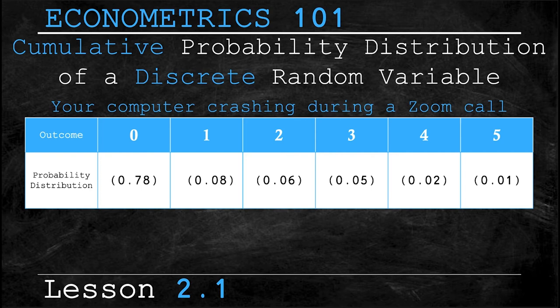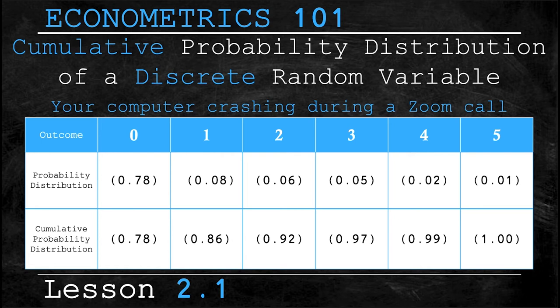Your computer can't crash less than zero times, it can't crash 3.7 times, and it can't crash a sixth time since you've already rage quit by then. Now let's take a look at the cumulative distribution row. All we do to calculate the cumulative probability is add up all of the previous probabilities. So here you can see that there's an 86% chance of your computer crashing once or less. That's the sum of the probability it crashes zero times, which is 78, plus the probability that it crashes once, which is 8%. However there is a 99% chance that your computer will crash four or less times. Once again that is simply the sum of all the previous possibilities up to and including the event of four crashes.